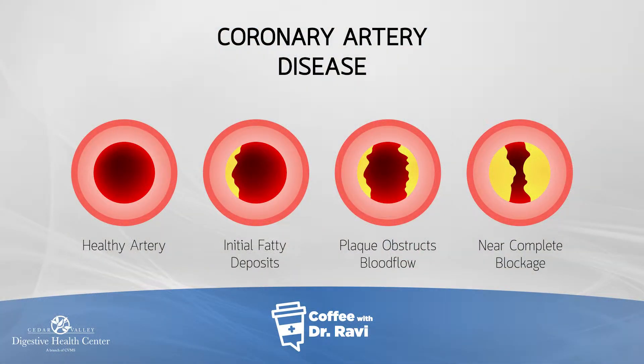The heart is supplied by three major blood vessels called coronary arteries, but the same process that is going on in the coronary arteries is happening in other blood vessels in the body. Think about those three blood vessels supplying the heart muscle, and as atherosclerosis — or coronary artery disease, as I'll refer to it — starts developing, the arteries start getting smaller and smaller.